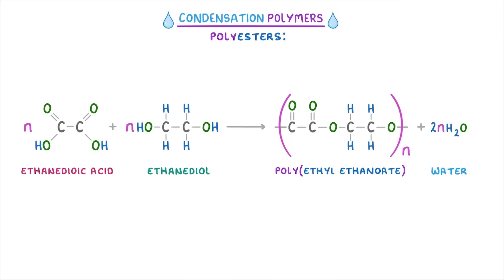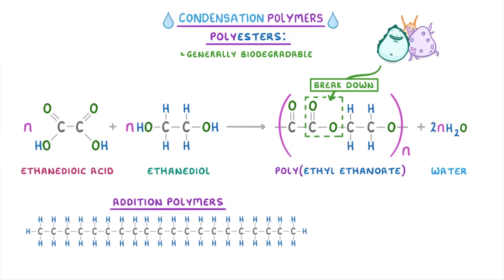The very last thing we need to say is that polyesters are generally biodegradable, which means they can break down naturally because bacteria and other microorganisms can break down the ester links. Importantly, this is a big difference to addition polymers like plastics, which generally aren't biodegradable and so stay in the environment for ages.